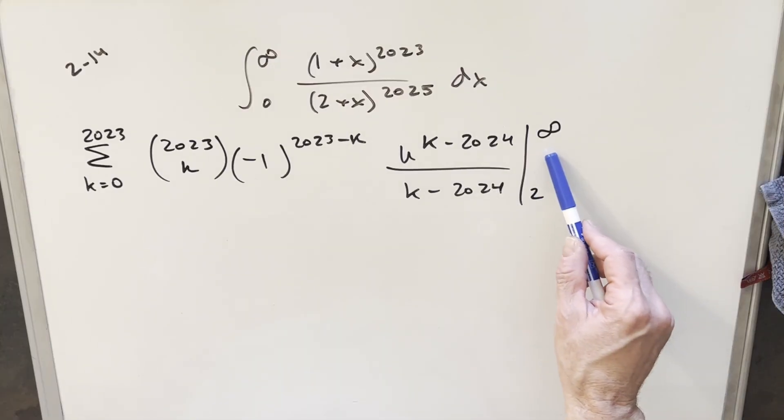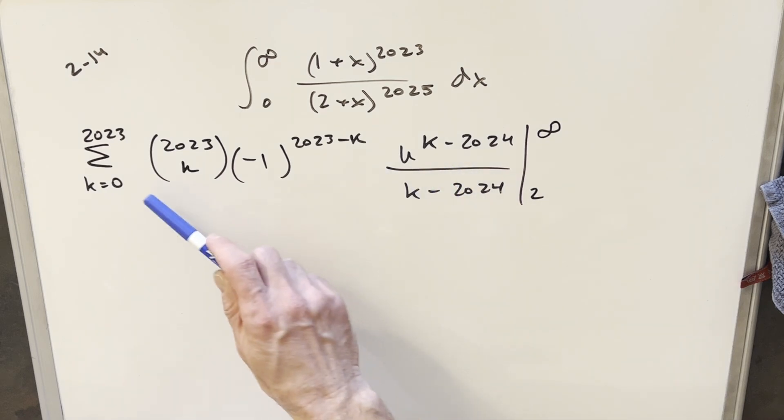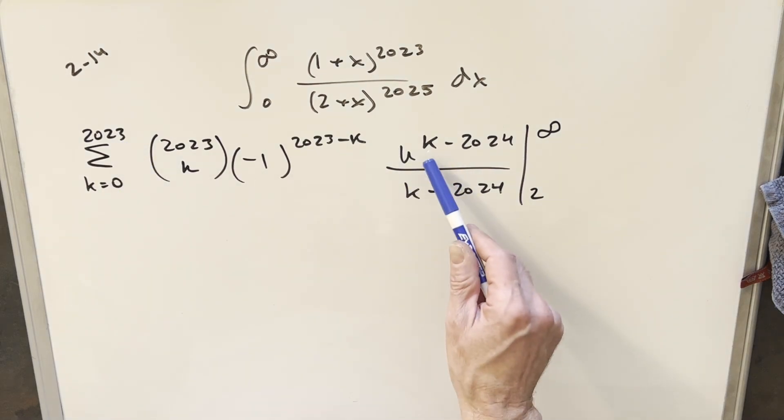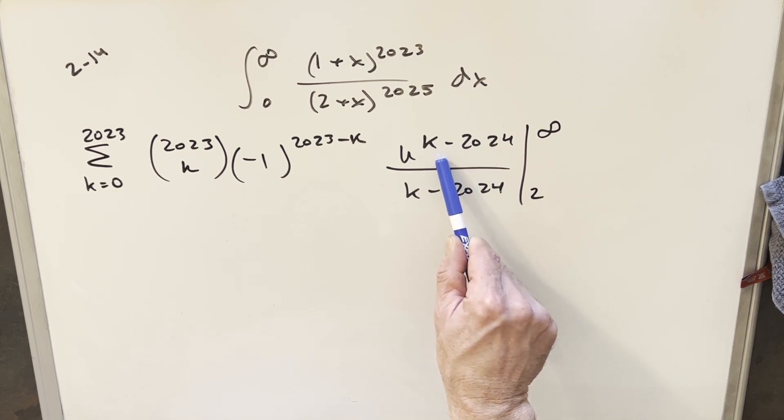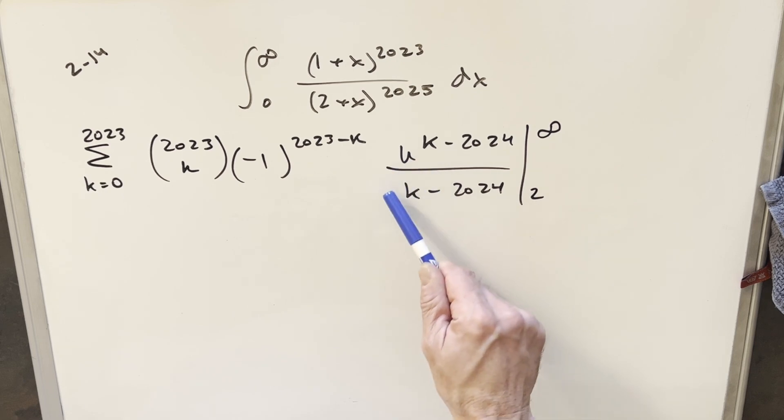Now in order to finish this off, we're just going to need to evaluate this thing. Now first evaluating at infinity, the thing to notice is k is going from zero to 2023. So even when k is 2023, the exponent is still negative. So when we plug in infinity, it's actually going to be in the denominator, and this piece is going to zero. So we don't have to worry about the infinity part.